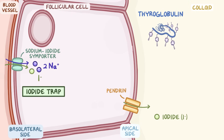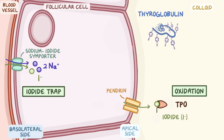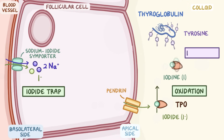Synthesis of thyroid hormones begins when follicular cells take in inorganic iodide ions from the blood, along with two sodium ions, via a sodium iodide symporter. This step is known as iodide trap. The iodide ion is pumped via the pendrin protein into the colloid, which contains thyroglobulin, the precursor of thyroid hormone. In the colloid, inorganic iodide undergoes oxidation via the enzyme thyroid peroxidase, or TPO, to become organic iodide.